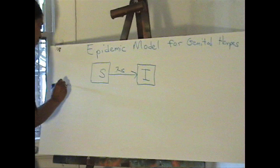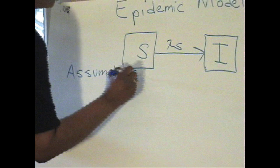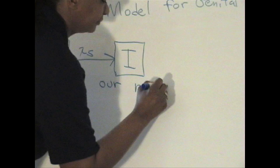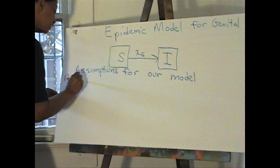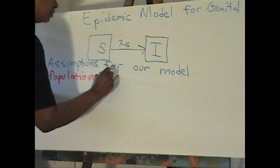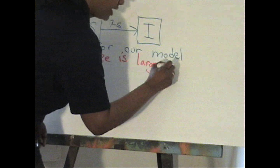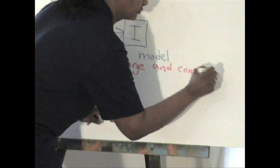Assumptions for our model. Assumption number one: population size is large and constant. So we'll have S(t) plus I(t) is equal to N(t). That's our first assumption.